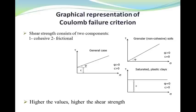It should be noted that the relationship between tau and sigma can be non-linear for some soil types. And finally, you should note that the higher the values C and phi, the higher the shear strength of a soil.